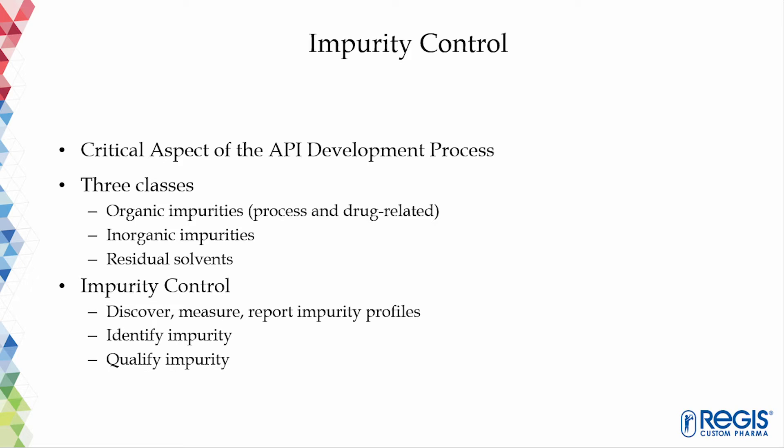There are three classes of impurities. Organic impurities, which are process and drug-related. Inorganic impurities, including heavy metals or other residual metals, and other materials such as filter aids and charcoals. Also, residual solvents — those are the solvents used during the steps of API manufacturing.